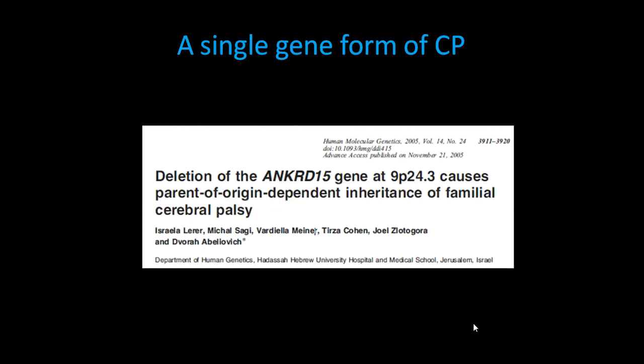The first single gene form of CP was actually discovered around eight years ago by a group in Israel, who found that in a single family there was a familial inheritance of CP — multiple family members actually had cerebral palsy. In this family they found deletions — missing genetic instructions — in a particular gene called ANKRD15. This set the stage for the idea that some forms of CP actually could be related to problems with a single gene.